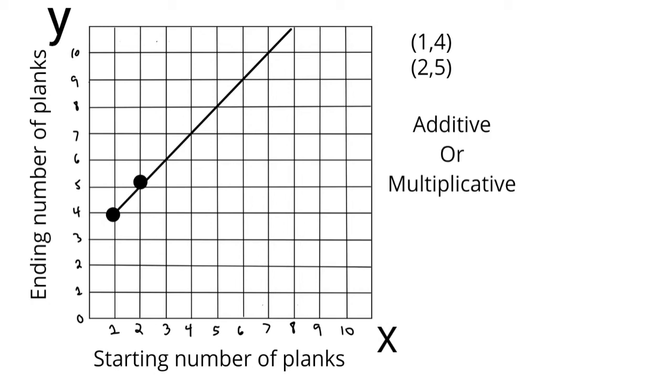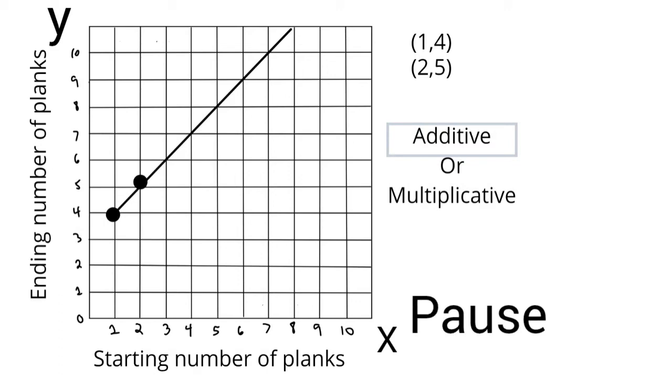Now I want you to see if you can figure out if this is an additive or multiplicative pattern. All right great job! So you probably noticed that to get from one to four and two to five is a plus three pattern, so that means it must be additive. Now I want you to pause the video and write a good equation that goes with that plus three pattern. Okay let's check your work. So all of my y amounts equal my x amounts plus that three. So I could continue this with (3,6) or (4,7).